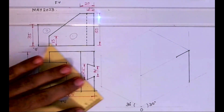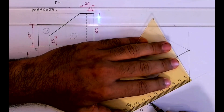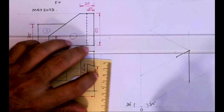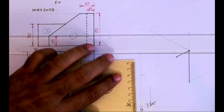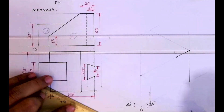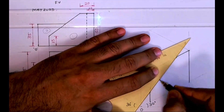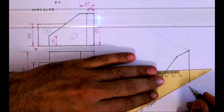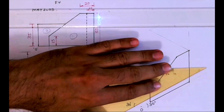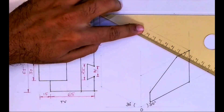I'll take 20, then I'll take 65 from the bottom and go up by 15. Then I will join these points to get the first part. Now, the same thing is behind, so I will take every point behind by 65.